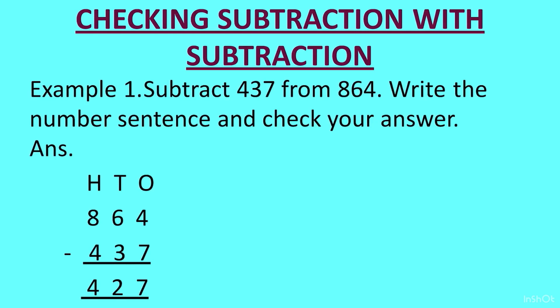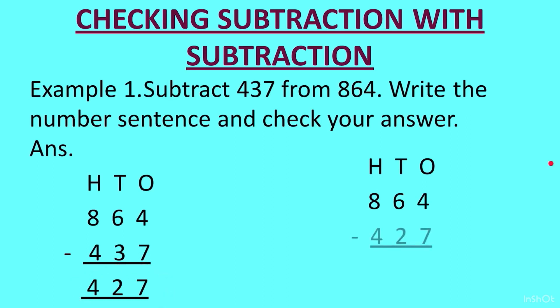The same thing can also be checked by using subtraction. You will write 864 and from that subtract 427. The answer you get should be 437. We write the place values: 864 on top, subtract 427. When you subtract you get 437, which is the same as the original number, so our calculations are correct.